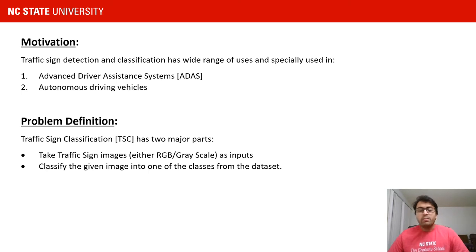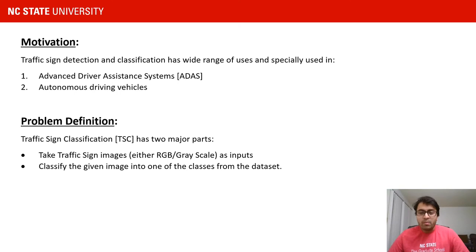So what is the motivation behind doing this? Traffic sign detection and classification is extremely useful in advanced driver assistance systems, where we can alert the driver whenever he is not following traffic signs around him. Also, traffic sign classification is a critical part of self-driving cars or autonomous driving vehicles.